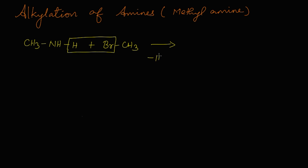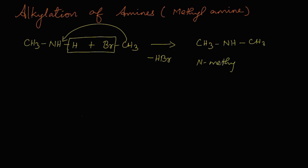...will leave as HBr — hydrogen bromide. This methyl group will get attached to the nitrogen, so we get CH3-NH-CH3. This is known as N-methyl methanamine, and this is a secondary amine. The starting material, CH3NH2, is methylamine or methanamine.